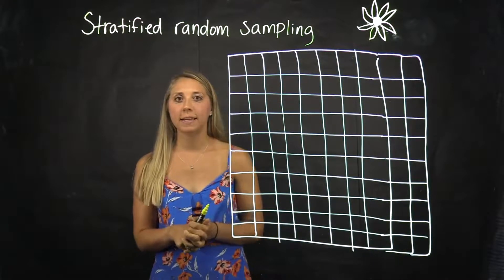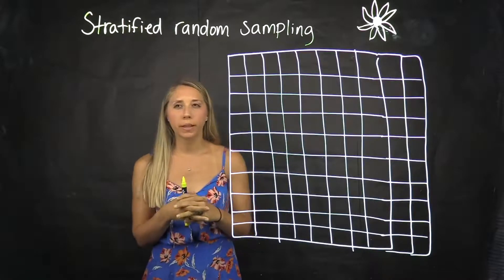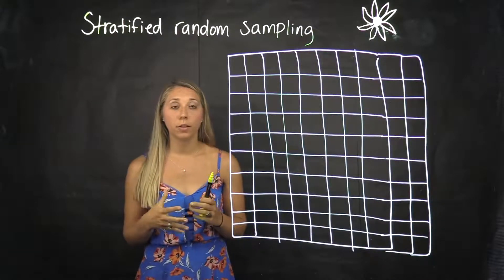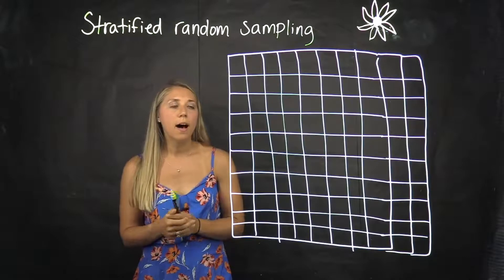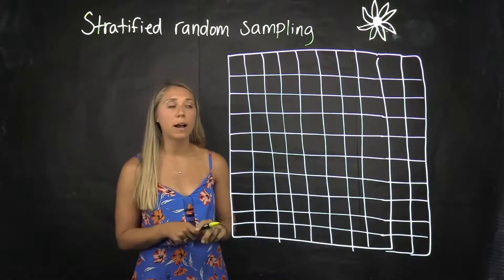Today we're going to talk about another example of stratified random sampling. So there's this really cool sunflower field by us in Cleveland and let's say we wanted to sample the heights of these flowers.